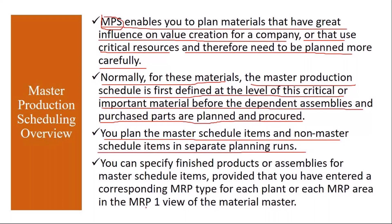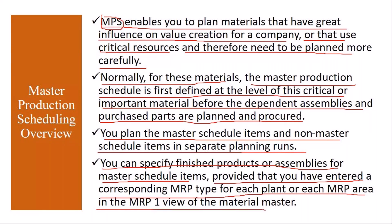You can specify finished products or assemblies as Master Production Scheduling items, provided that you have entered a corresponding MRP type for each plant or MRP area in the MRP-1 view of the material master. So the question is how to identify an MPS item — a critical item — and that is done using the MRP type in the MRP-1 view.